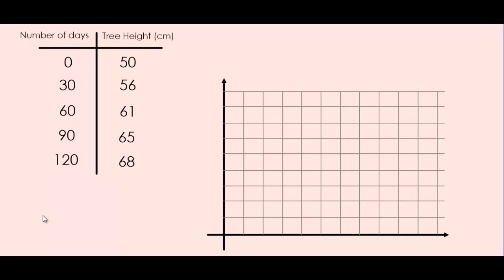By looking at our two headings on the table: do the number of days depend on how high the tree is? Or does the tree's height depend on how many days it's been planted? That second sentence sounds more reasonable. So the tree height is our dependent variable and the number of days is the independent variable.